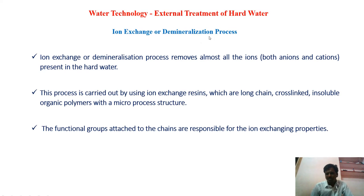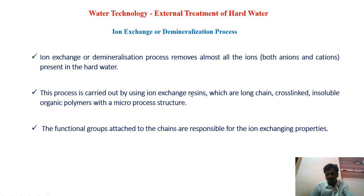Demineralization means removal of calcium and magnesium ions from the water. In this process, almost all the ions — both anions and cations — can be removed. That is the main important feature of this process. In this process, we are using ion exchange resins, which are made up of polymer having a long chain cross-linked functional groups. These polymers are insoluble in water and are more hydrophobic in nature. We use these resins to exchange ions from water.